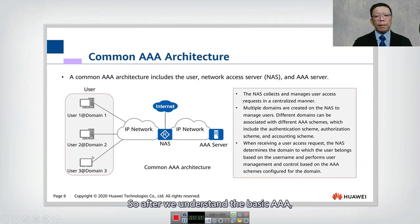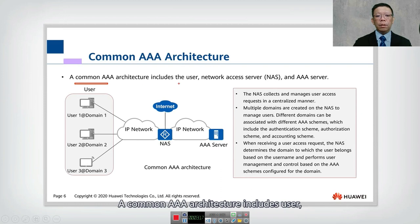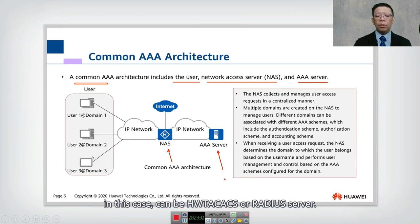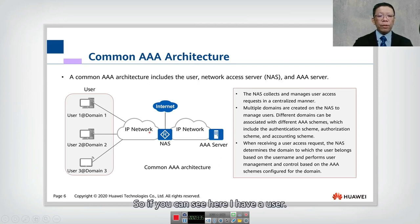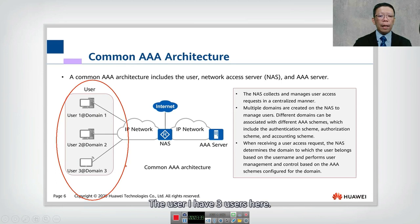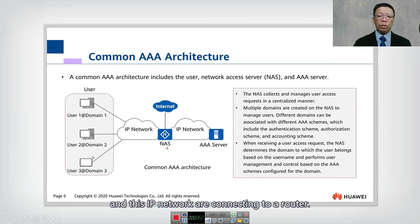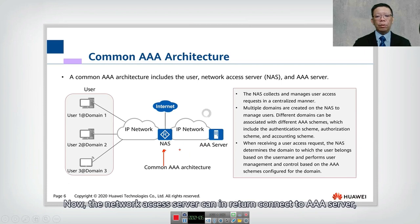After understanding the basic AAA concept, let's look into the common AAA architecture. A common AAA architecture includes a user, a Network Access Server (NAS), and an AAA server. The AAA server can be HW TACACS or a RADIUS server. Here we have three users — user one at domain one, user two at domain two, and user three at domain three — all connecting through an IP network to a router acting as the NAS, which connects to the AAA server.